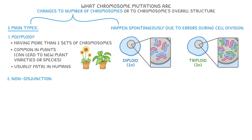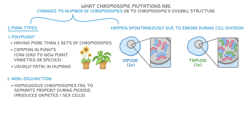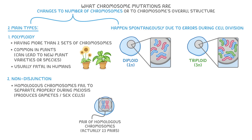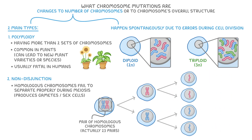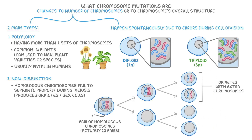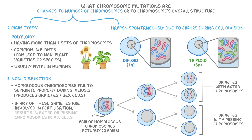Moving to non-disjunction mutations: these occur when homologous chromosomes fail to separate properly during meiosis — the process that produces gametes, or sex cells. Here we can see a pair of homologous chromosomes in a cell about to go through meiosis. In reality there'd be 23 pairs in a human cell. Usually this produces four haploid gametes, each with one set of chromosomes. But sometimes the chromosomes don't separate properly, resulting in some gametes with extra chromosomes and some with missing chromosomes. If any of these gametes are involved in fertilization, the resulting individual will have extra or missing chromosomes in all of their cells.